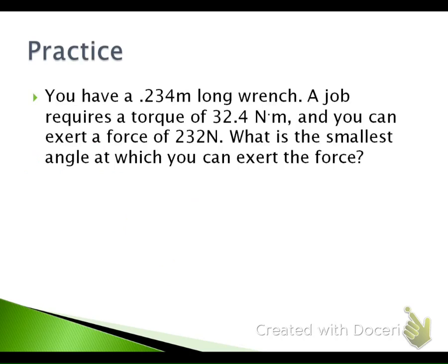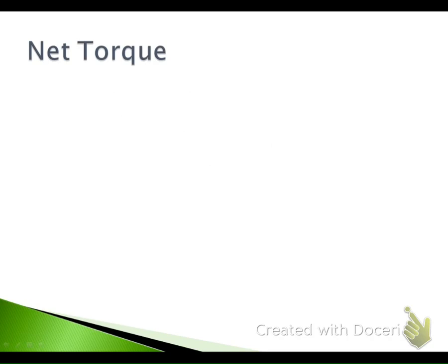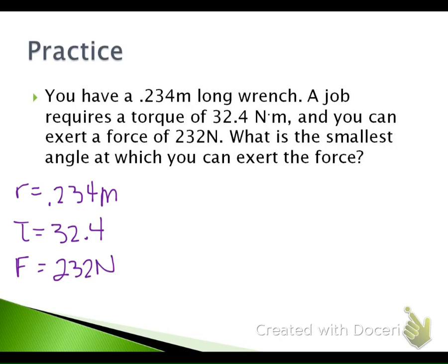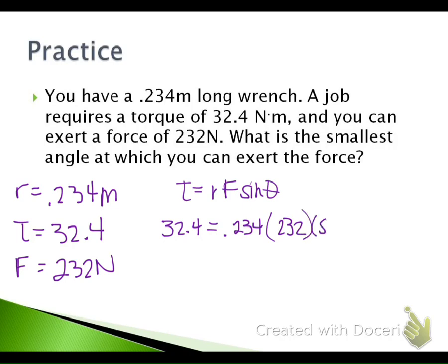In this problem, we're given the radius, the force, and the amount of torque needed — and we solve for the angle. We have a radius of 0.234 meters, a torque needed of 32.4 newton-meters, and a force of 232 newtons. Using T = R × F × sine of theta: 32.4 equals 0.234 times 232 times sine of theta.